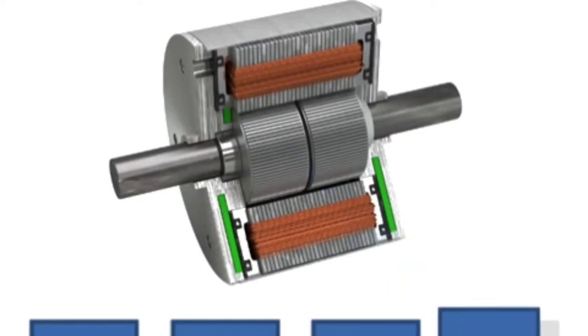The stepper motor is a brushless electric motor that converts pulses into mechanical shaft rotation. Each pulse moves the shaft through a fixed angle defined by the multiple-toothed electromagnets arranged around a gear-shaped rotor.